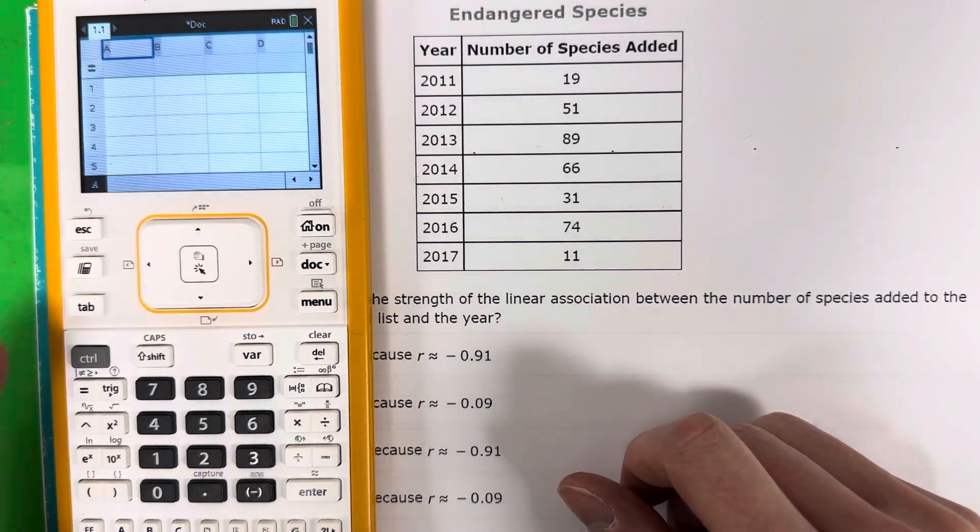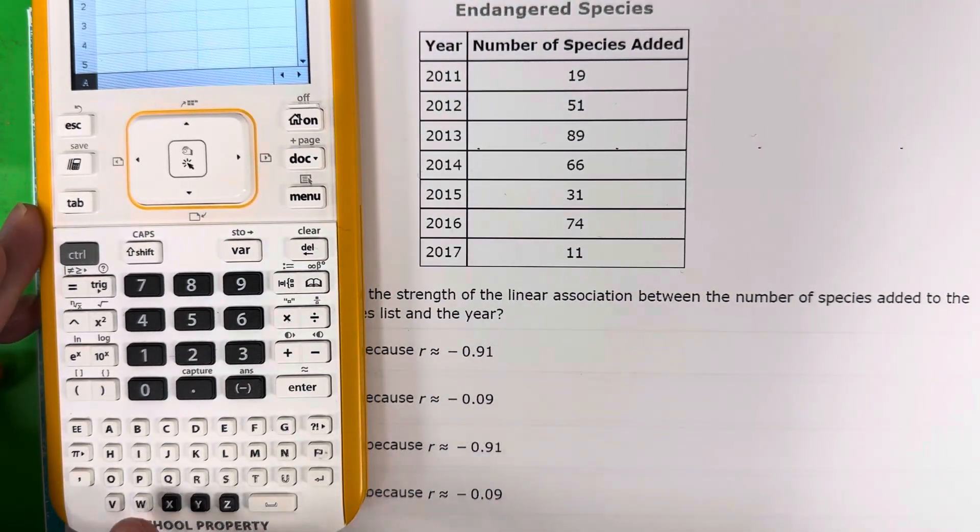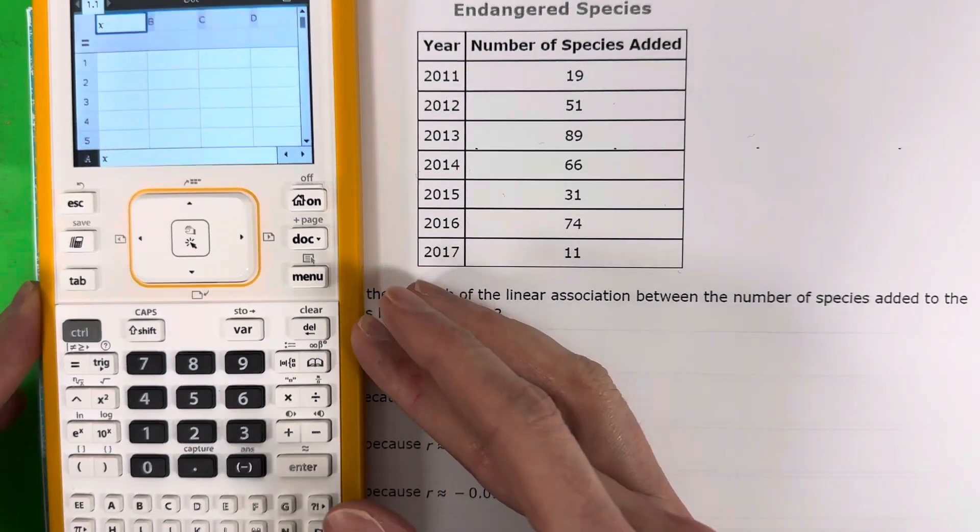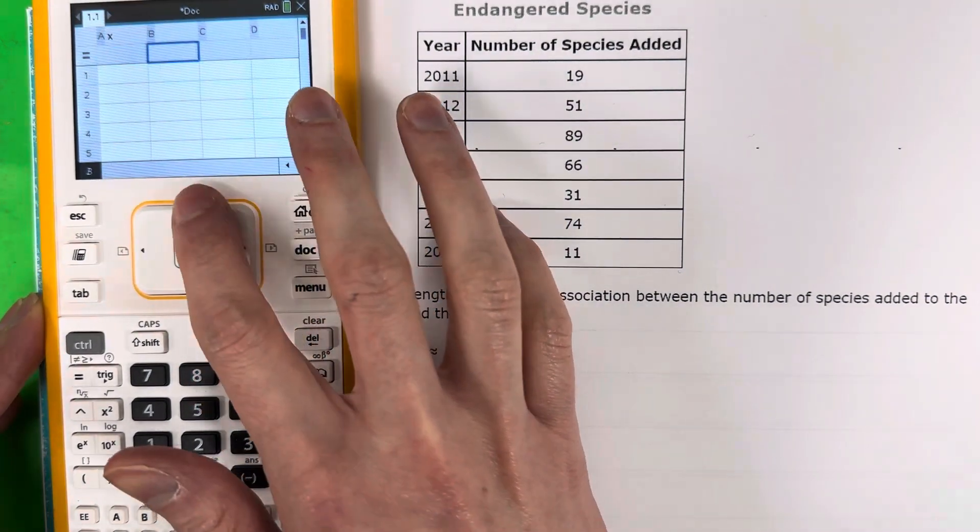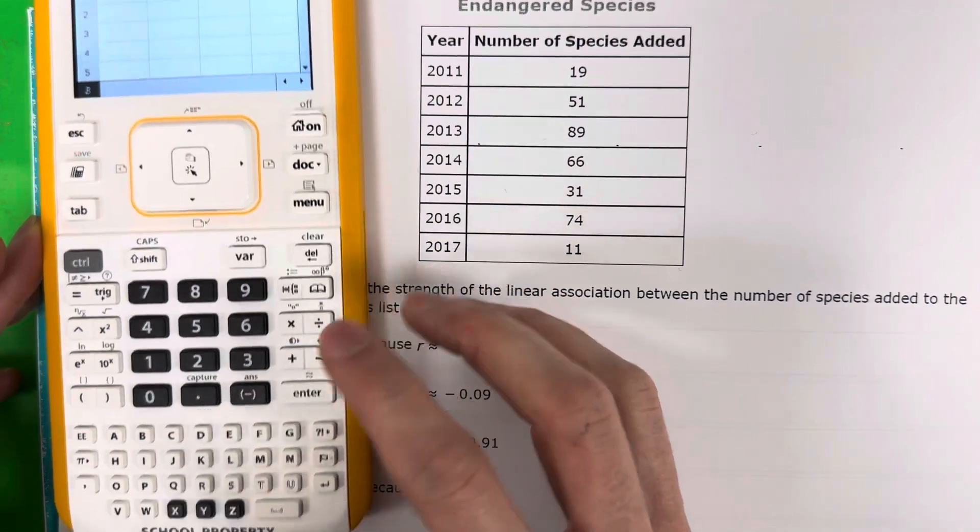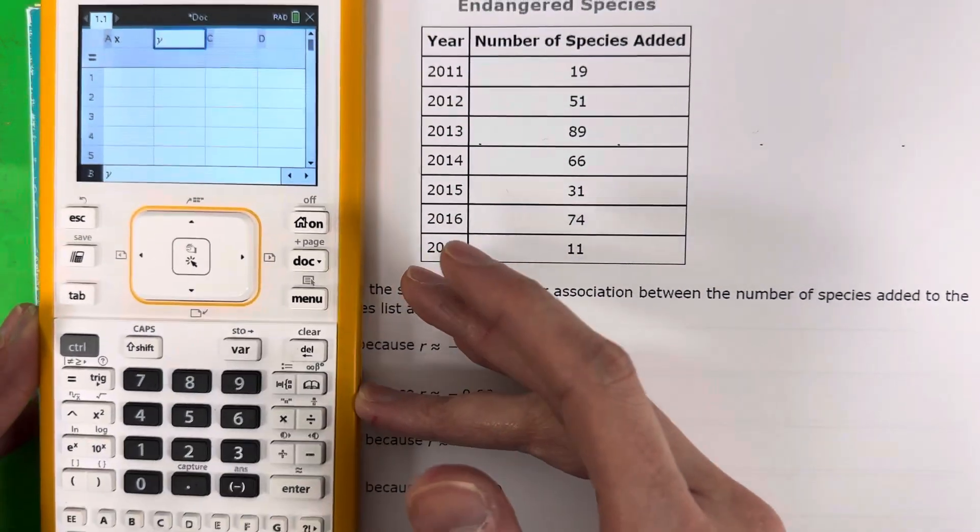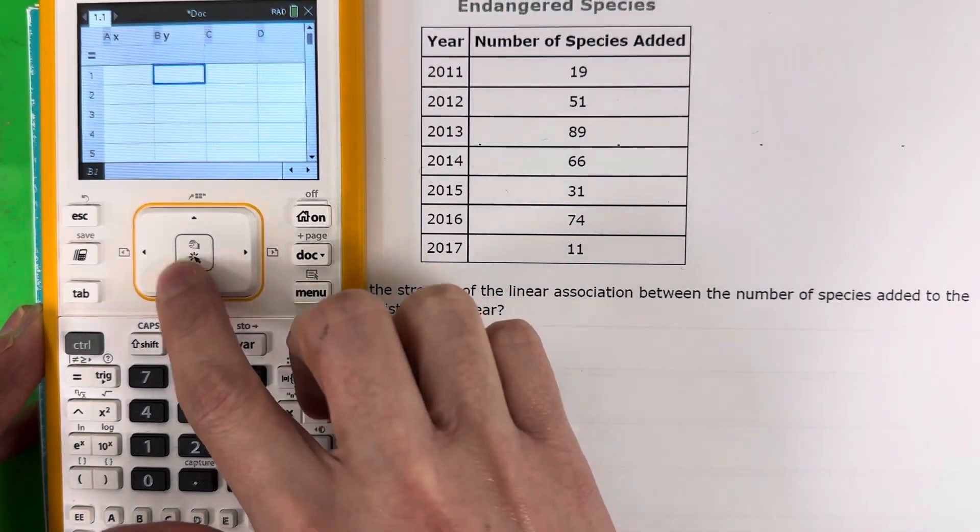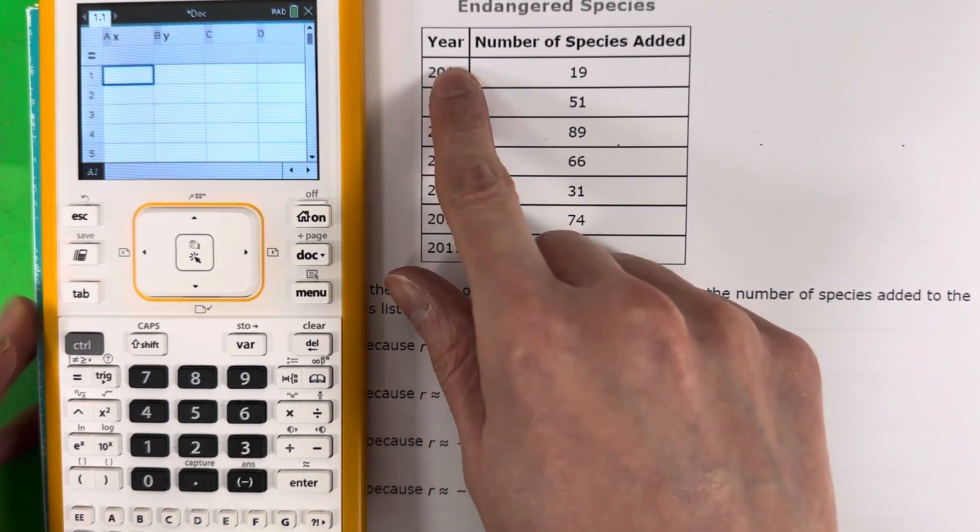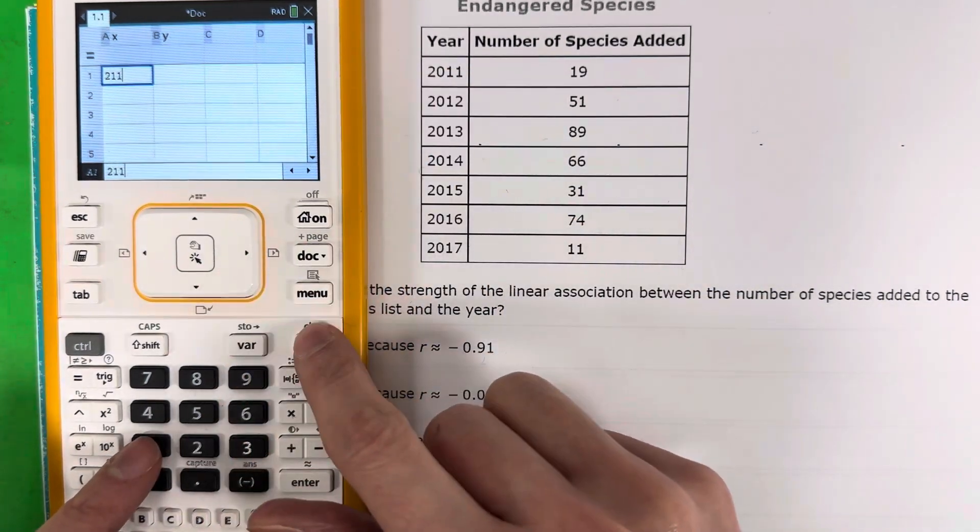Go up to the A, you're going to change that to X. So go ahead and push X there for that. Go down, go to the right, go back up. The B, you're going to go ahead and put Y. Okay, go ahead and go down. Here, we're going to go ahead and put our list.